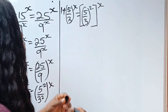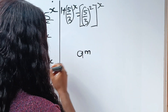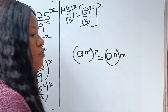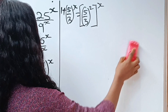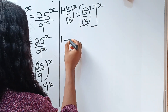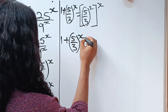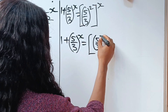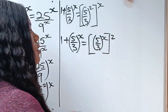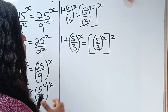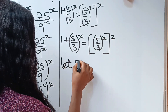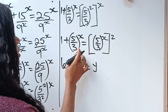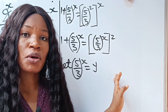Now look at what we have. Recall that a to the power of m raised to the power of n can also be written as a to the power of n raised to the power of m. So that is why I'm going to write that this is 1 plus 5 over 3 to the power of x squared. Let 5 over 3 to the power of x be equal to y, since we have the same thing here and here. This will enable us to form a quadratic equation.